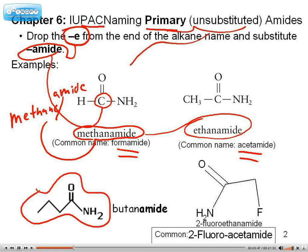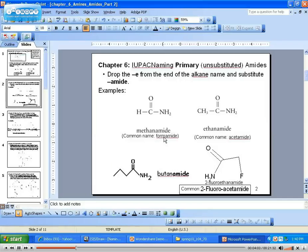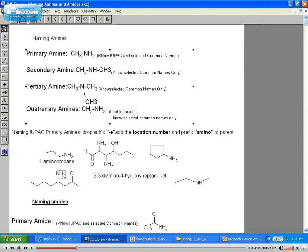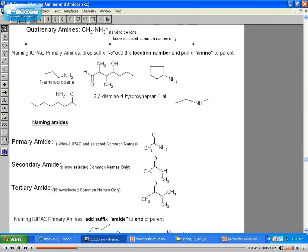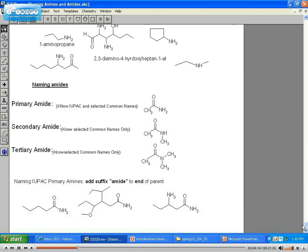For example, this one over here is butanamide. This one, when you have a functional group, it's 2-fluoroacetamide — carbon 1, carbon 2, 2-fluoroacetamide. Again, for primary amides, make sure you know the IUPAC method of naming them. And if I give you a common name, then yes, you would have to memorize it.